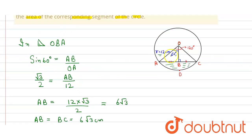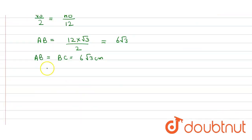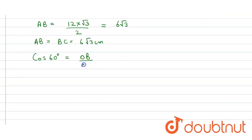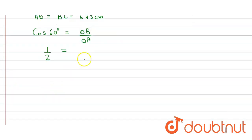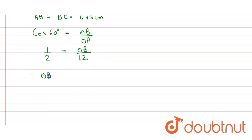Applying cos 60° in the same right-angle triangle: cos 60° = OB / OA, so 1/2 = OB / 12, giving OB = 6 centimeters.